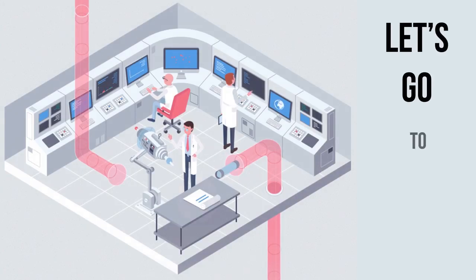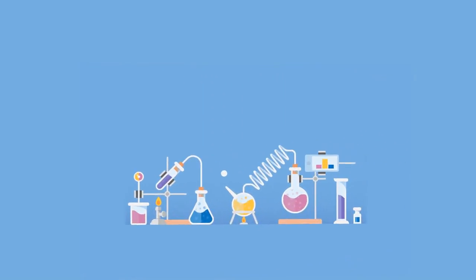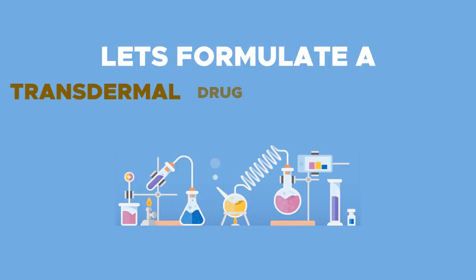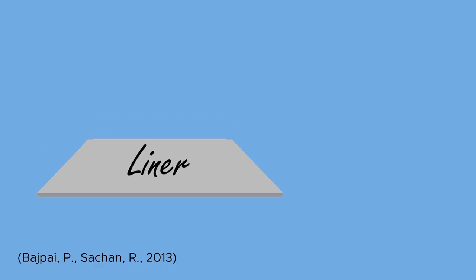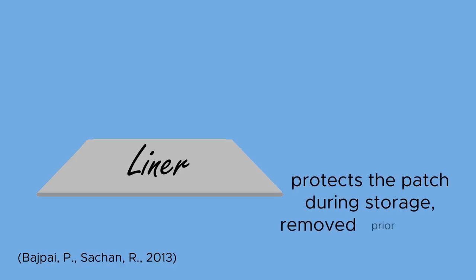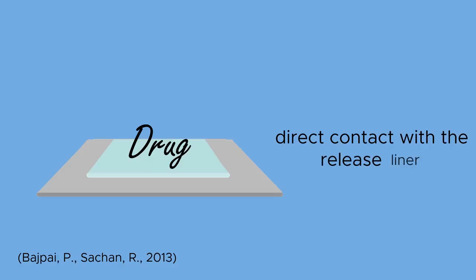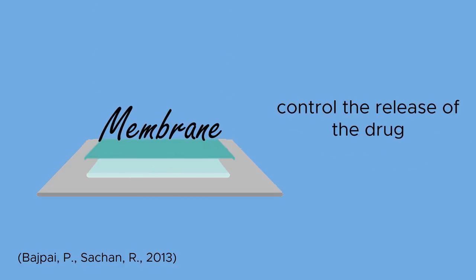Now let's go to the lab and formulate a transdermal drug delivery system. The bottom layer is the liner — it protects the patch during storage and is removed prior to use. Next is the drug solution, which is in direct contact with the release liner. The following layer is the membrane, which is used to control the release of the drug.